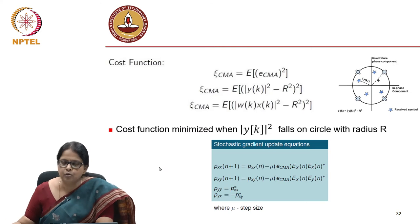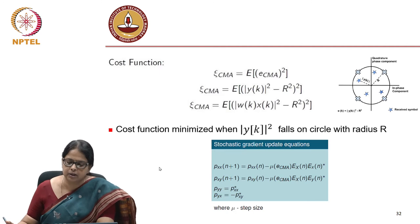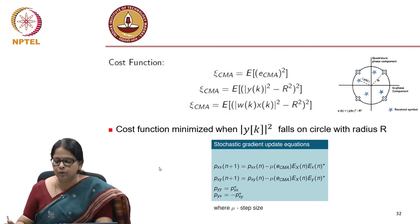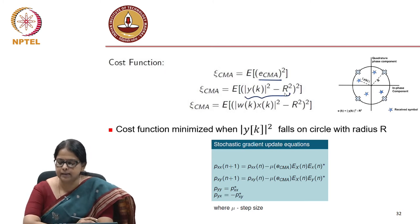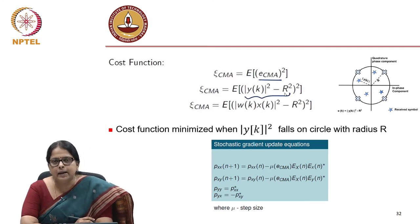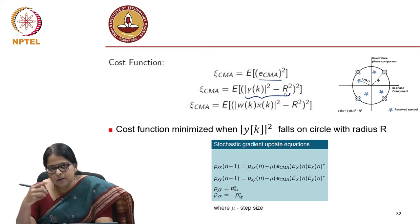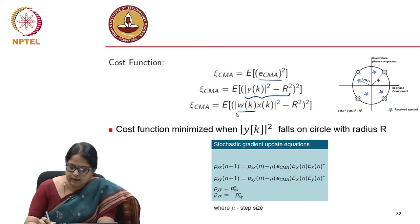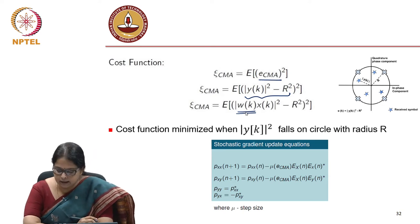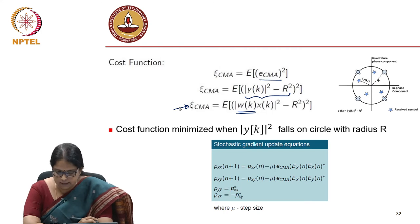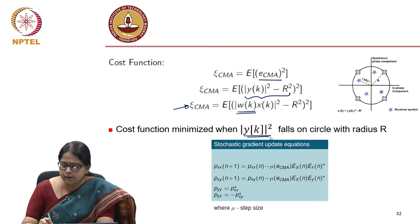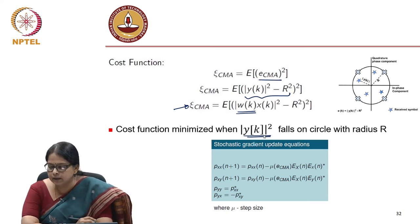What you try to do in your update is minimize the cost function. The cost function is the expectation value of the error, where the error is |y(k)|^2 - r^2. Every time you are updating, you are updating the weights of the adaptive filter, so w(k) is what gets updated. The cost function is minimized in CMA when |y(k)|^2 falls on a circle with radius r.